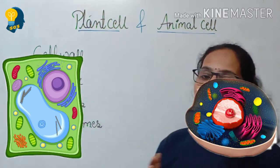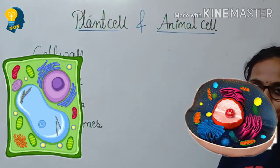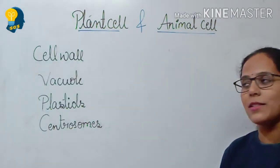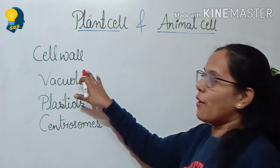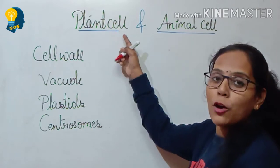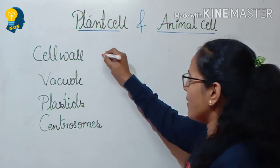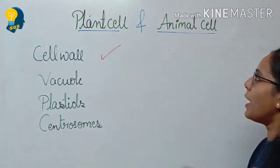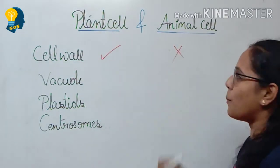Now let us quickly make a note of everything we have learned — the differences between the plant cell and the animal cell. First, the cell wall: is the cell wall present in the plant cell? Yes, it is present in the plant cell, but in the animal cell the cell wall is absent.